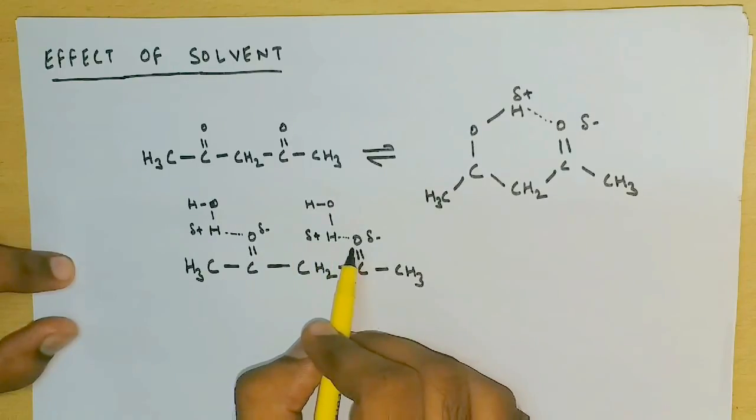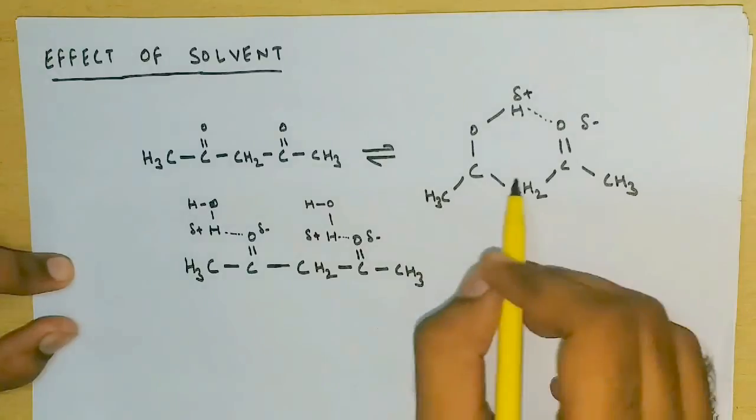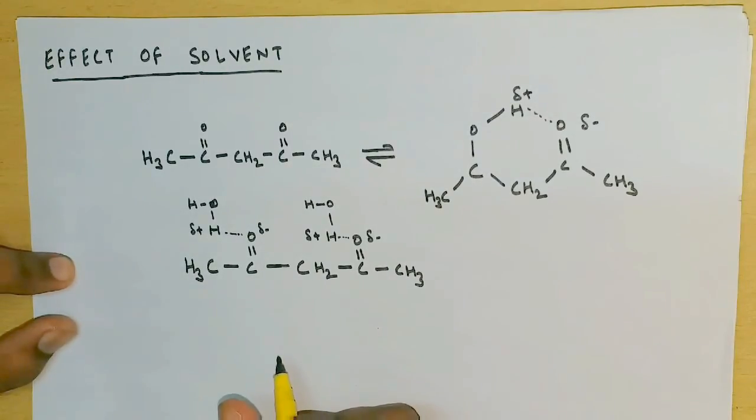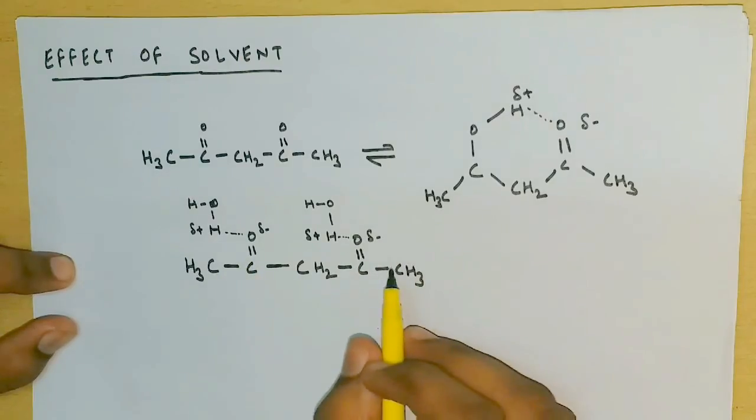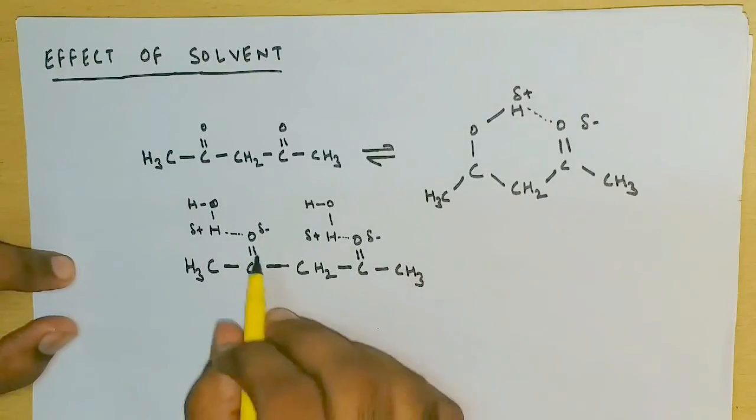This stabilization of keto form by solvation has a great effect in water, because intermolecular hydrogen bonding of water with the keto form's carbonyl group can now take place as an alternative to enolization.